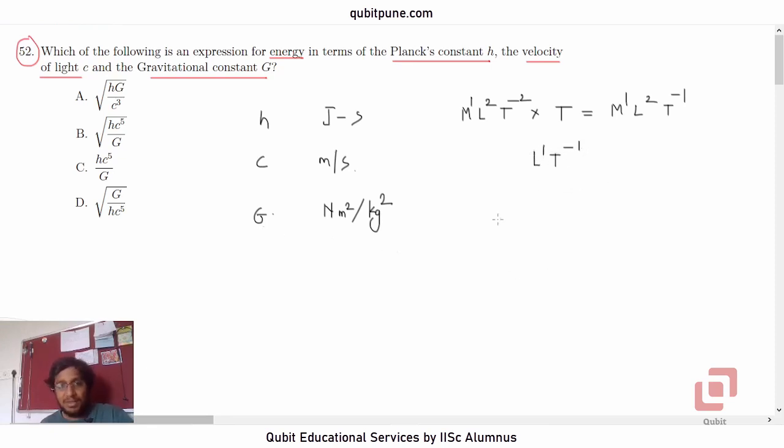And what about G? m1 l1 t minus 2 for Newton, meter squared l2 again, per kg squared m raised to negative 2. So what is it? m raised to negative 1, l raised to 3, t raised to negative 2.